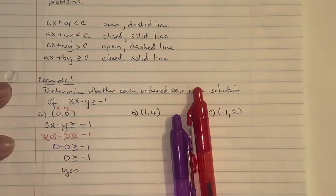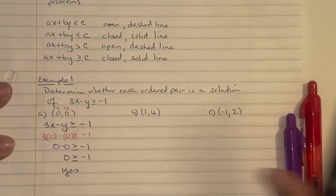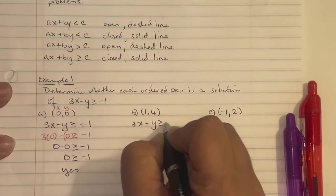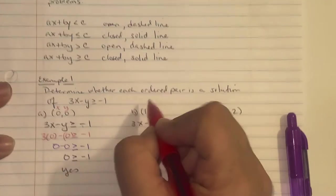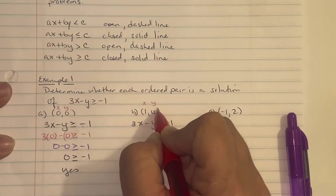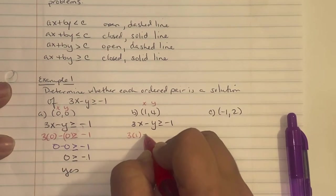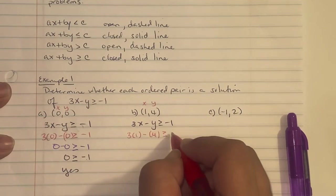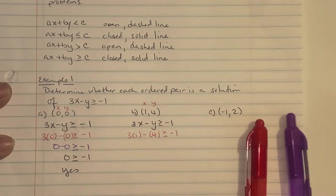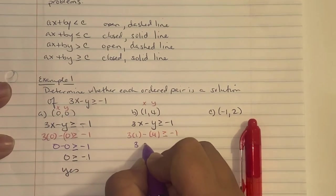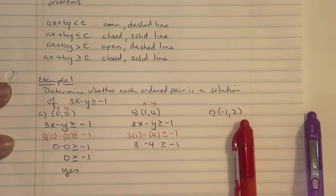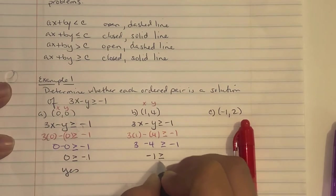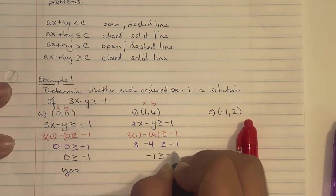Now for part B, we write the equation 3X minus Y greater than or equal to negative 1, and substitute in X = 1 and Y = 4. So 3 times 1 minus (4). Always replace variables in parentheses in case of sign changes. We get 3 times 1 is 3, minus 4, greater than or equal to negative 1. 3 minus 4 is negative 1. Since it says greater than or equal to — there's a line meaning I can be equivalent — negative 1 equals negative 1, so the answer is yes.